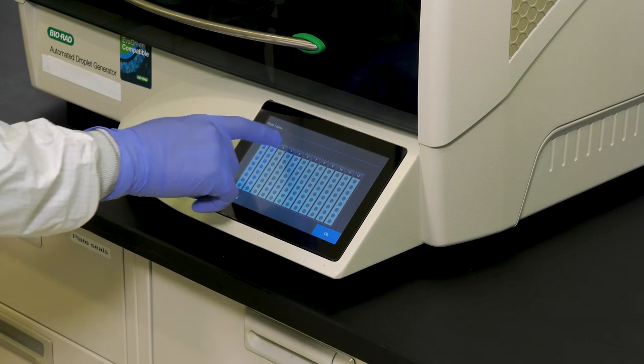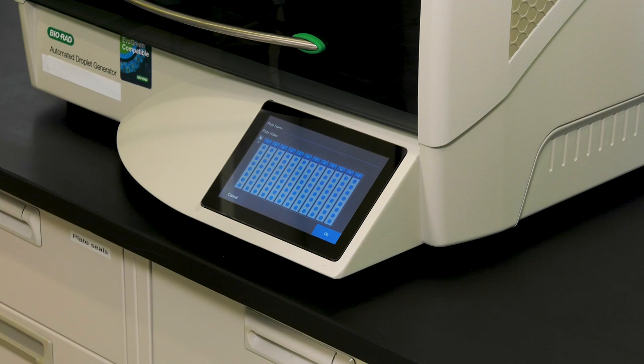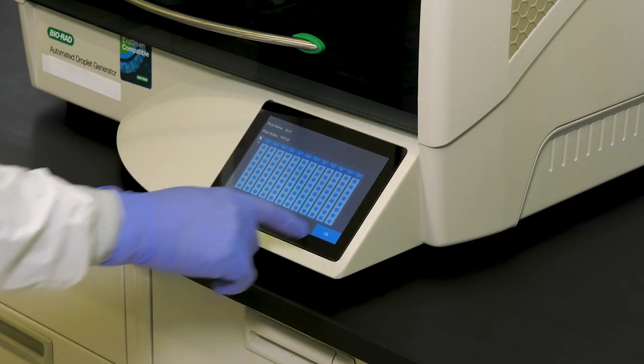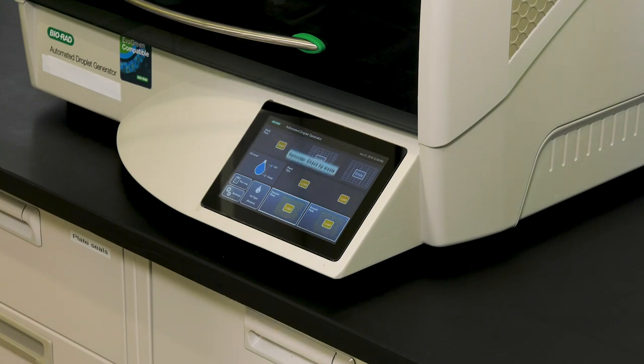Create a plate map by touching the Configure Sample Plate button. On the plate map, select the columns from which you wish to generate droplets or press the blue arrow to select all the columns for a complete 96-well sample plate. You can name the plate map and add notes if you desire. Press the blue OK button to return to the main screen.